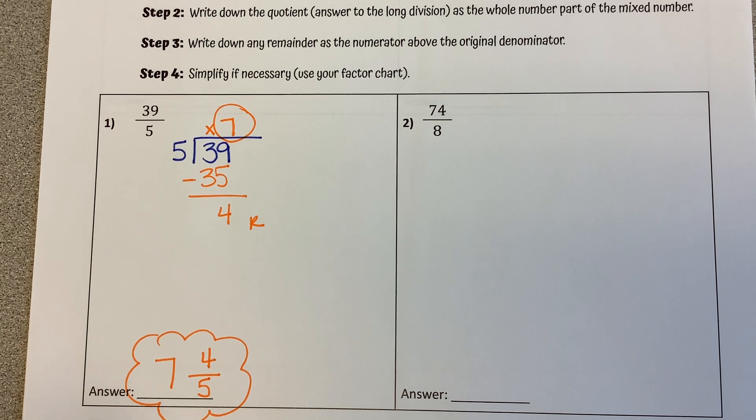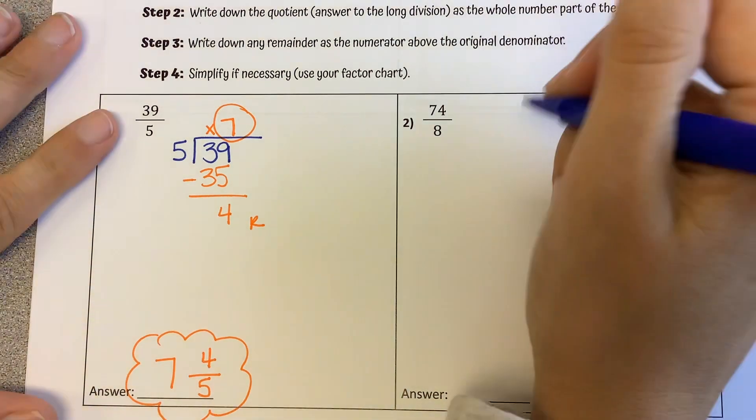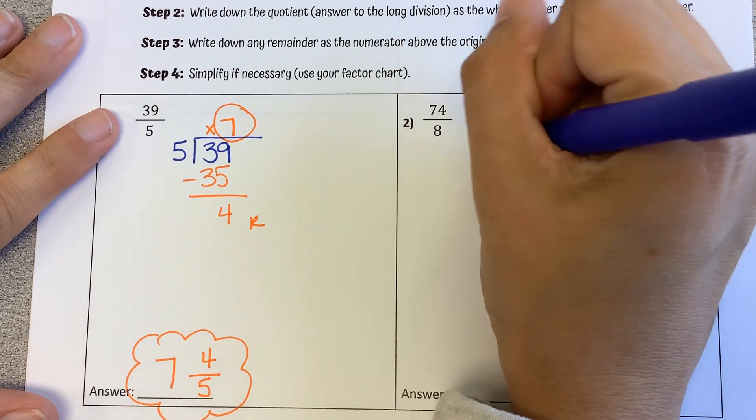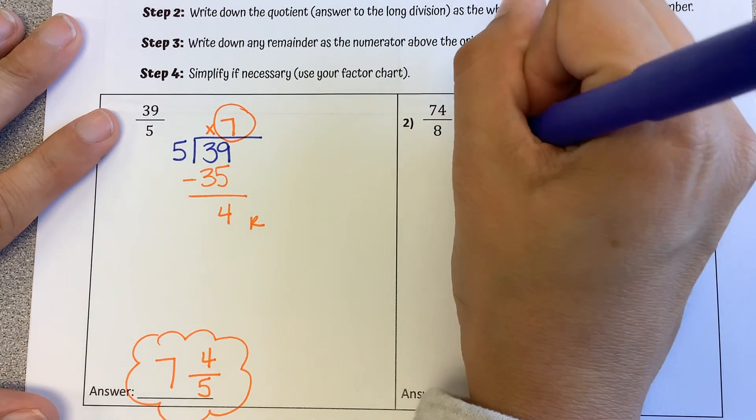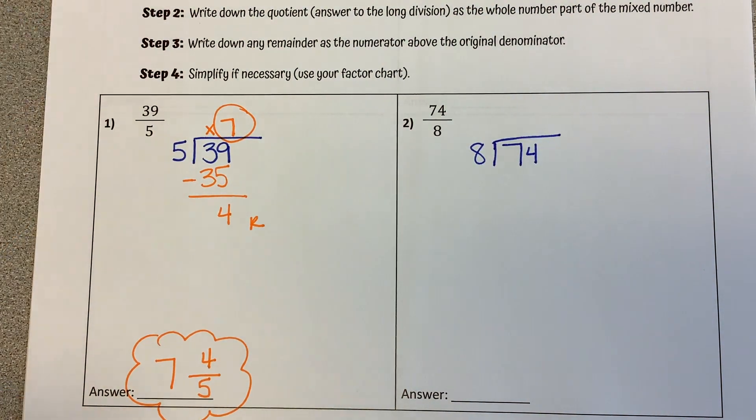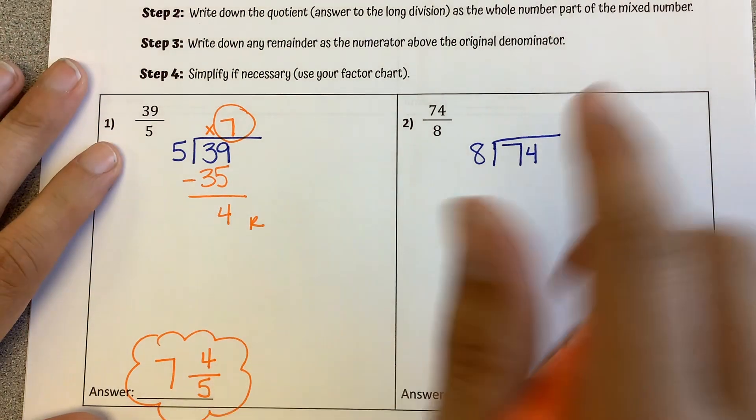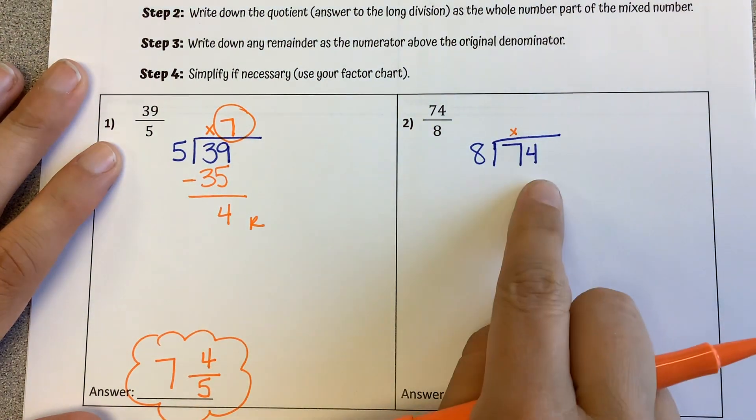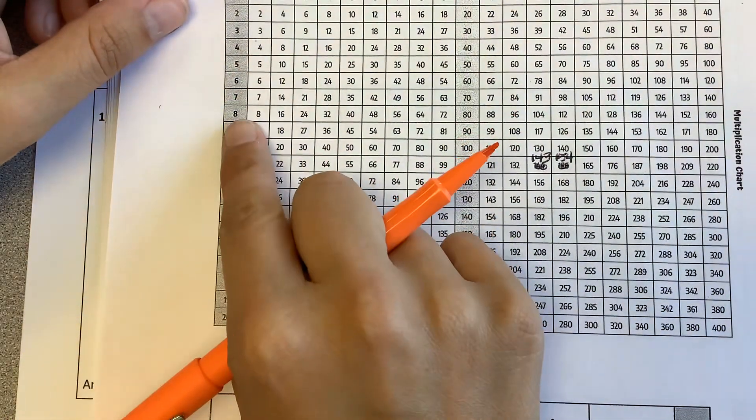Let's try this one again. We got 74 over 8. So I'm going to set up a long division problem. 74 divided by 8. And getting at my multiplication chart. 8 does not go into 7. How many times does it go into 74?